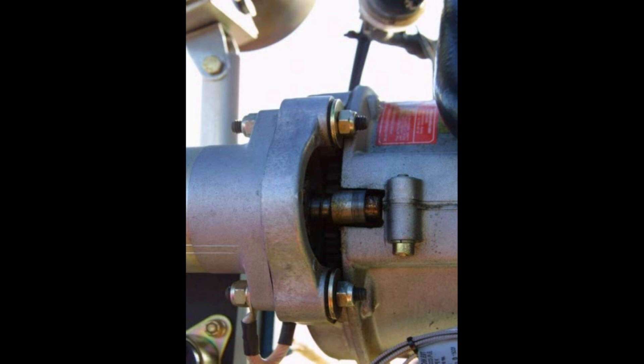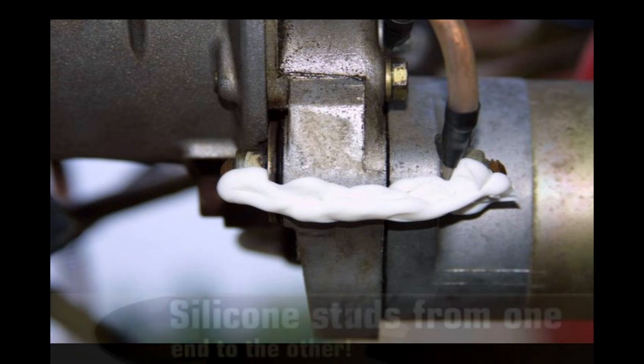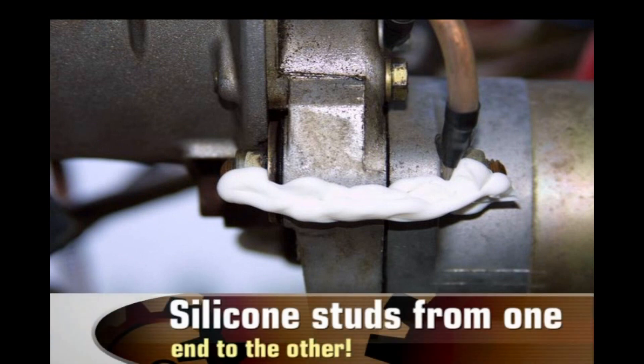into the spinning magneto, causing considerable engine damage and possible engine failure. A simple way to help prevent this damage and possible engine failure is to run a thick bead of silicone from one end of the stud to the other. This will hold all of the parts in place until you catch it in a pre-flight and replace the studs.